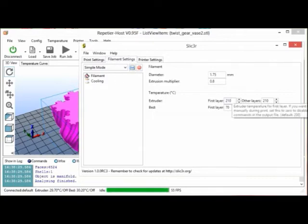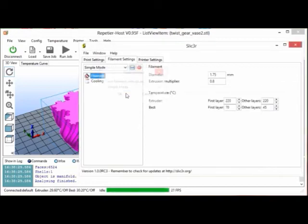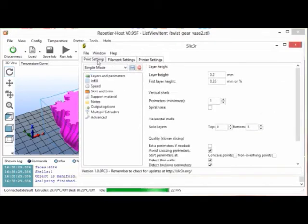Now go to filament settings and change layer temperatures. If you are upgrading from J-head hotend, then add 10 degrees to your usual extruder temperatures for both first layer and other layers.